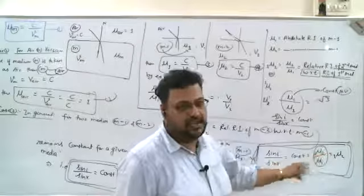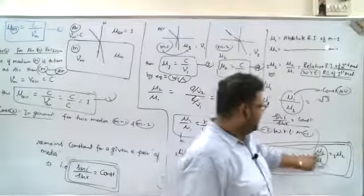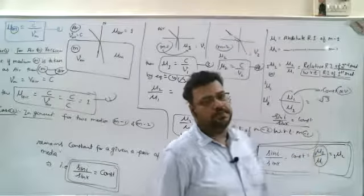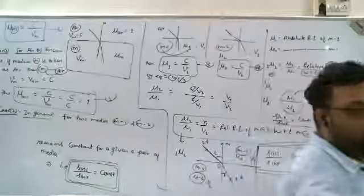What do we read? 1 mu 2. What do we read? Relative refractive index of medium 2 with respect to medium 1. How much do we get to understand?